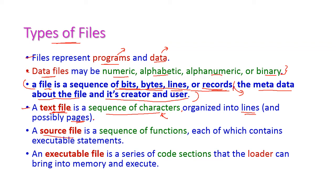The next type is source file. The source file is a program file. In C language we write program files with extension .c. In C++ the extension is .cpp. Java means the extension is .java. These are all source files which contain a sequence of functions. Each function contains executable statements because this is a program file.